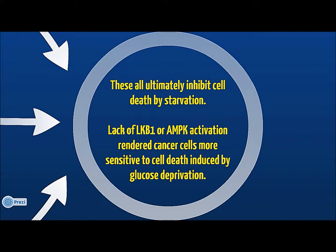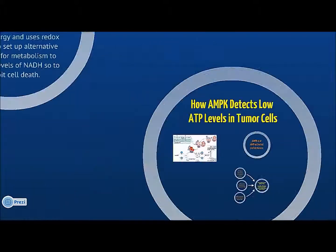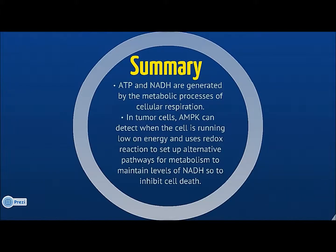In summary, ATP and NADPH are generated by the metabolic processes of cellular respiration. In tumor cells, AMPK can detect when the cell is running low on energy and uses redox reactions to set up alternate pathways for metabolism to maintain levels of NADPH to inhibit cell death.